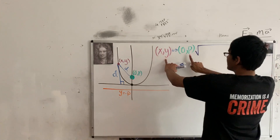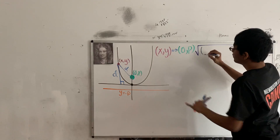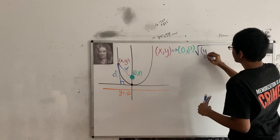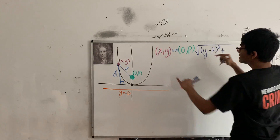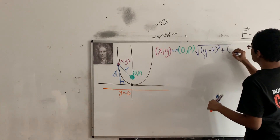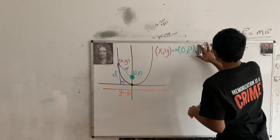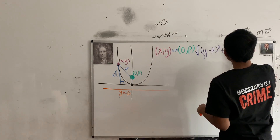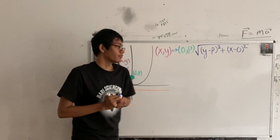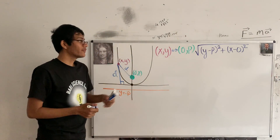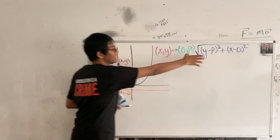Using the distance formula, the distance between the purple point x comma y and the green focus at zero comma p is the square root of the quantity y minus p squared plus x minus zero squared. That gives us the distance between the point on the parabola and the focus.